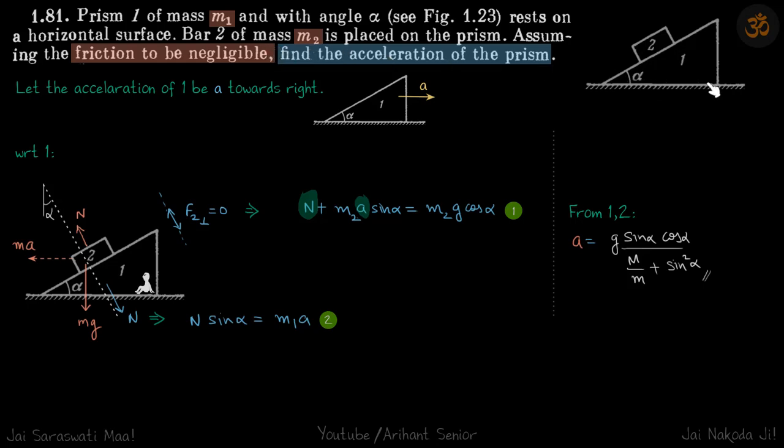We are given the same prism and wedge from the previous problem, but this time all surfaces are frictionless and we are not giving any external forces. The masses of the blocks are given as M1 and M2. We need to find the acceleration of the prism.